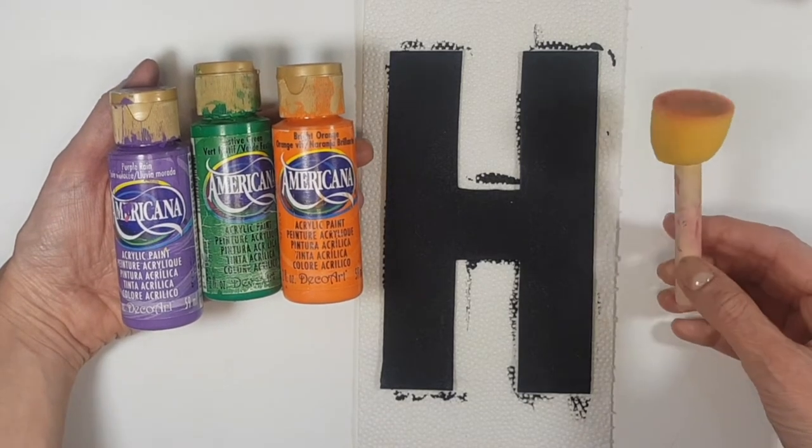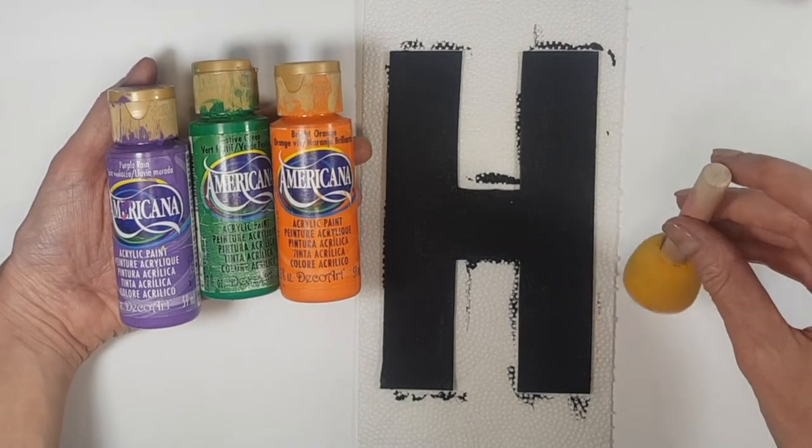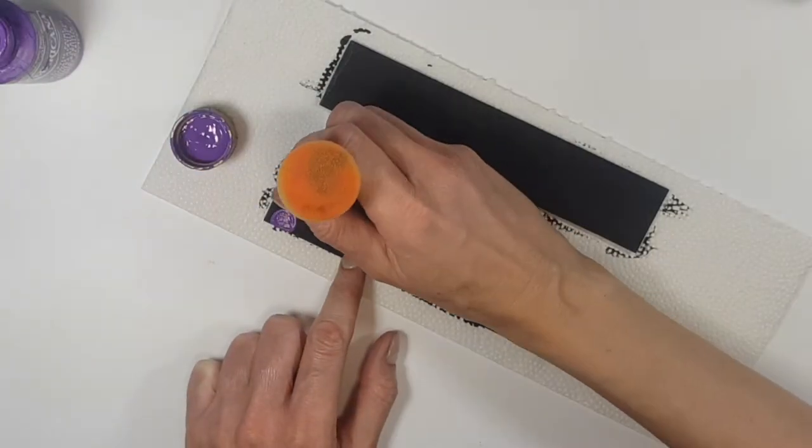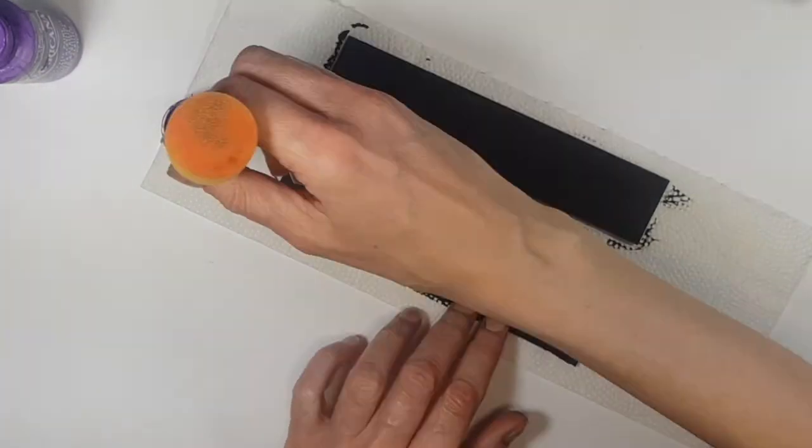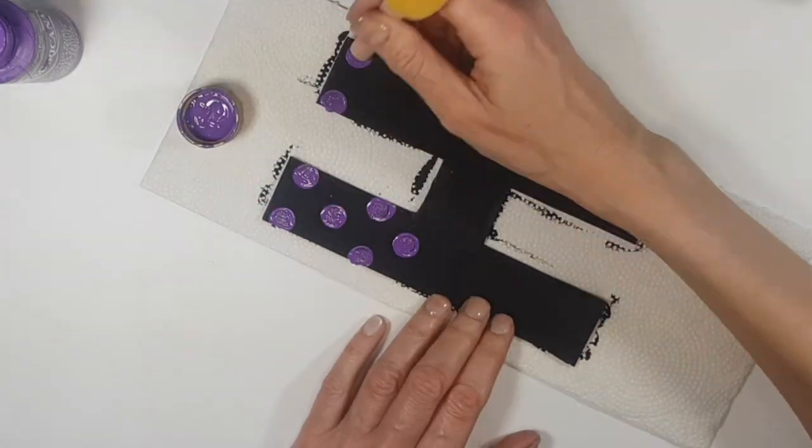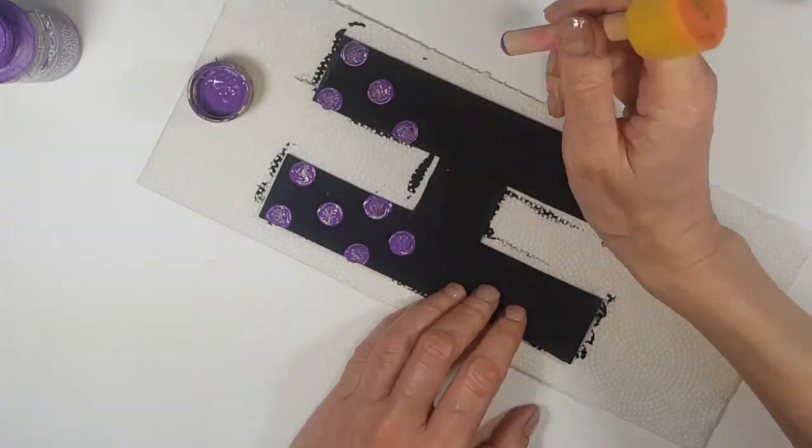But for this next step, I'm going to be using this part, which is pretty much like a dotting tool, a big one. And I'm going to add dots in a polka dot pattern, like this, pretty much all over the place, and I'll add those dots in every other one.